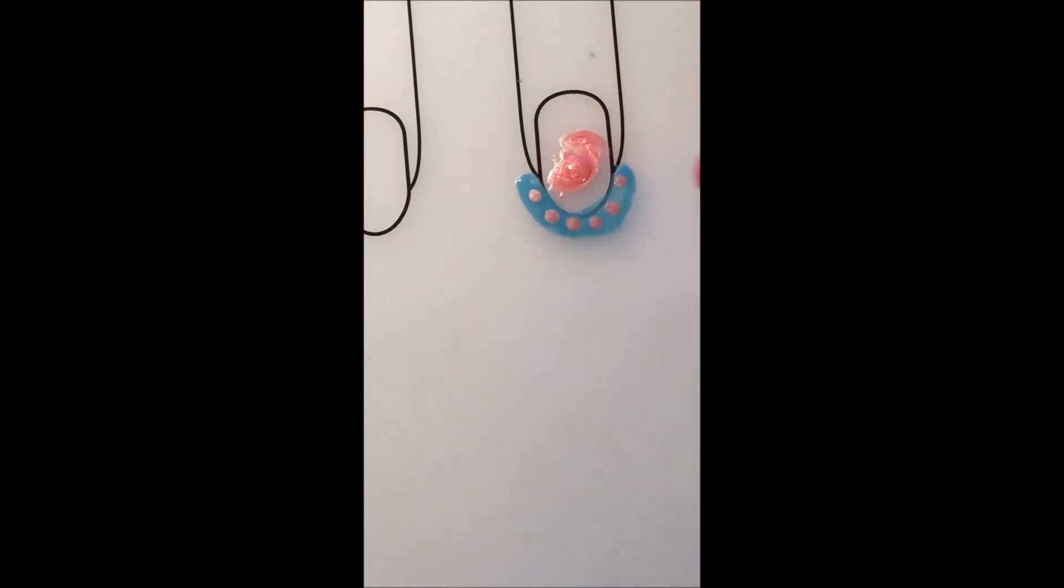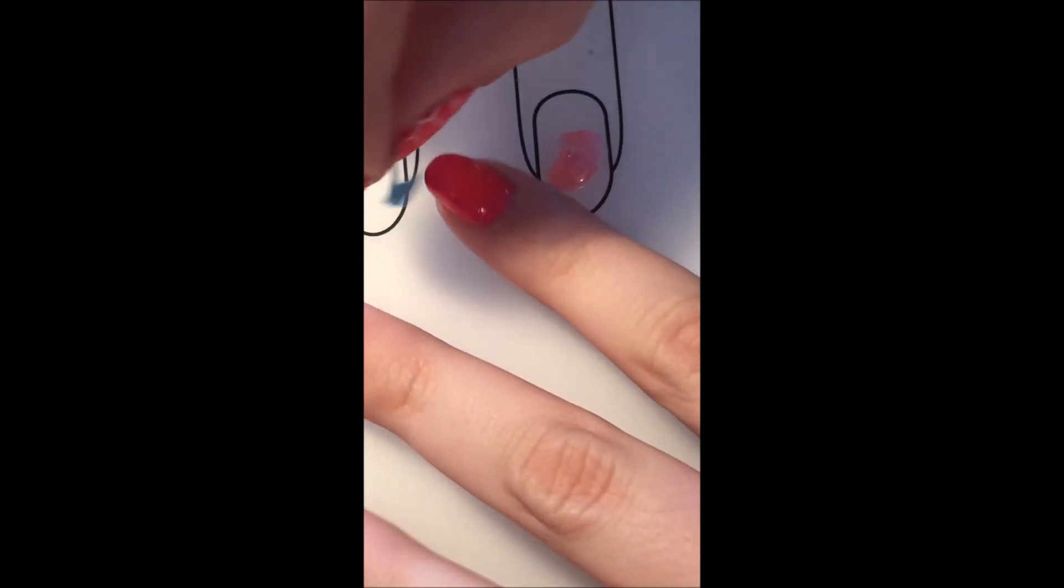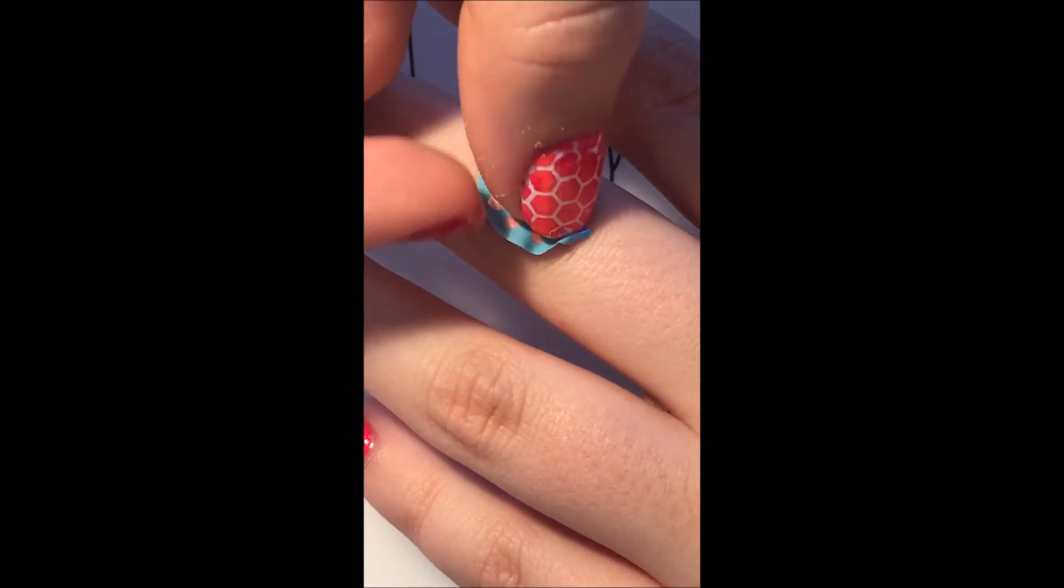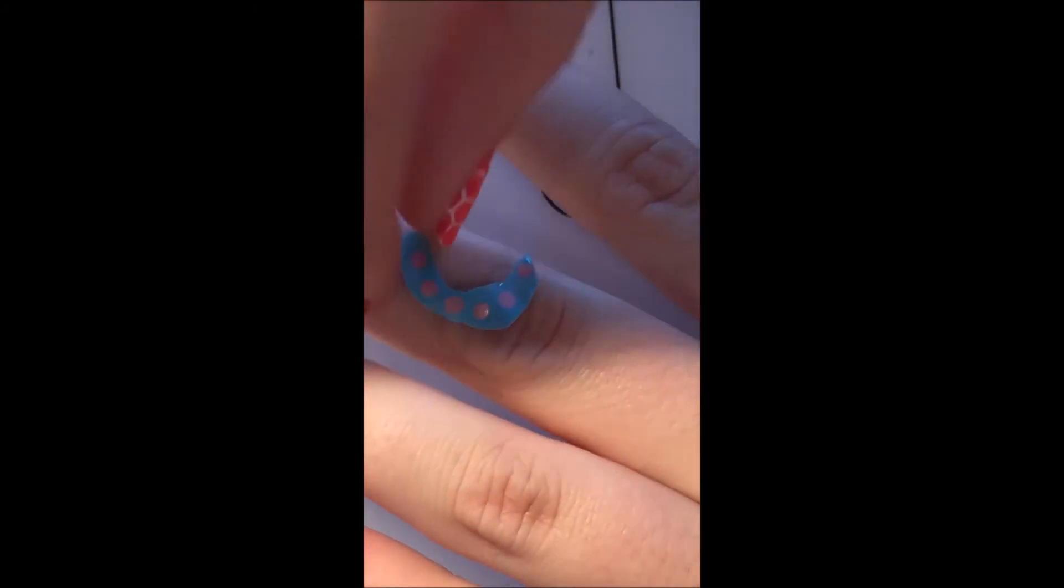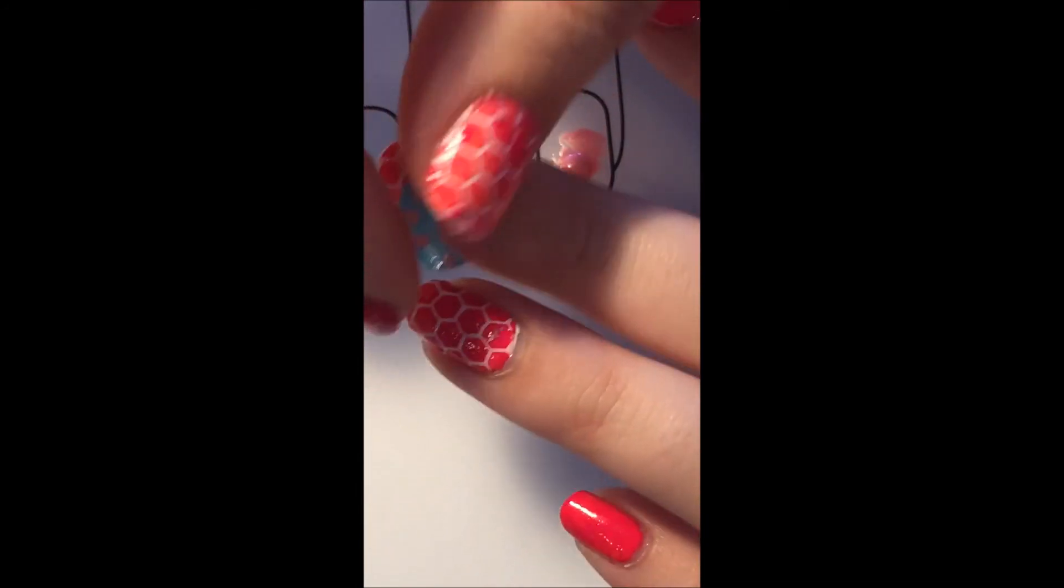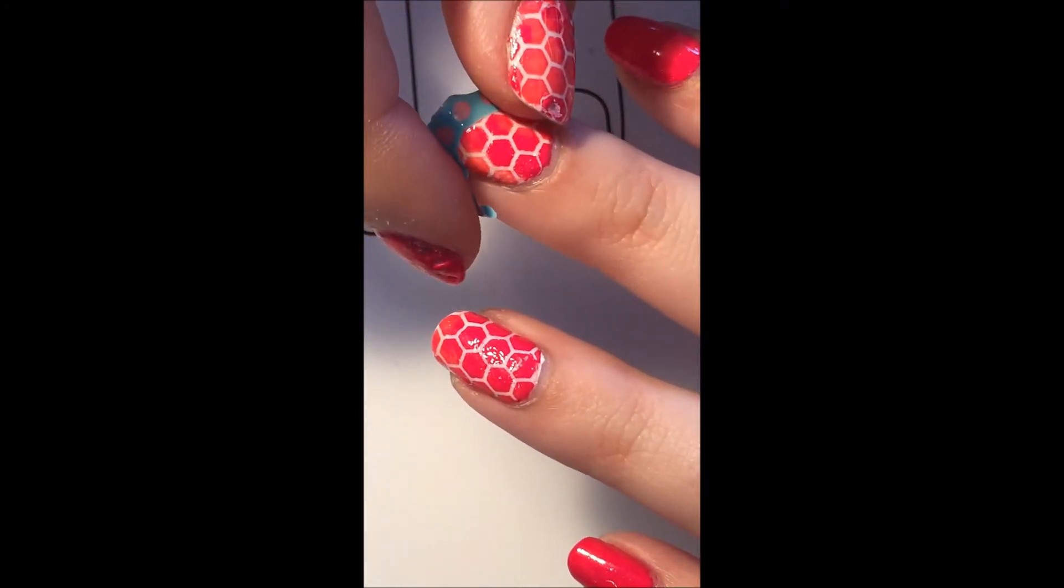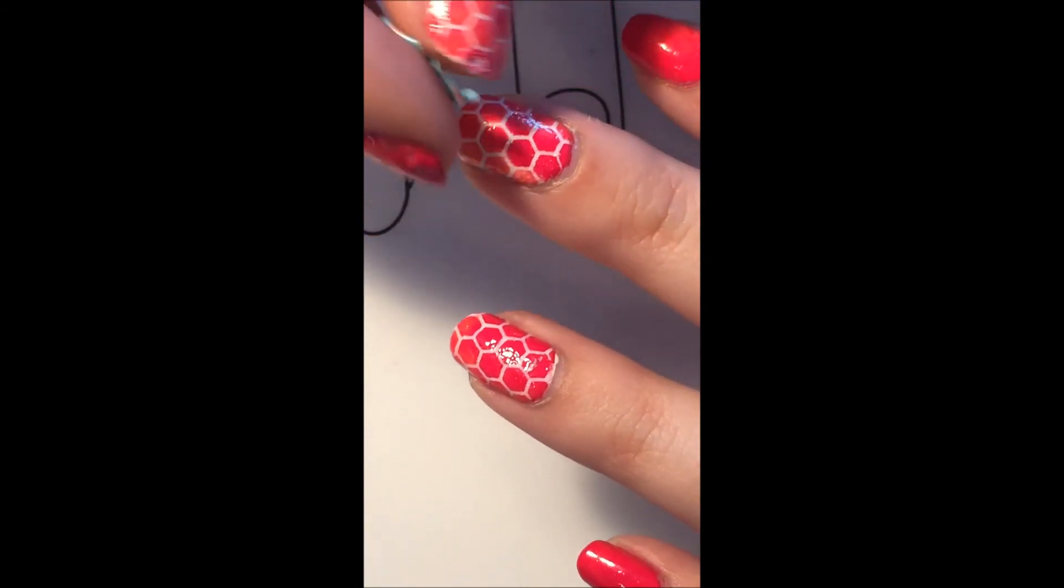Once the French tip is dry, you want to take your cuticle pusher and go along the side like that, and carefully peel that up. And there it is. So you can just place that on your finger like that or however you want to put it on. And there's the French tip.